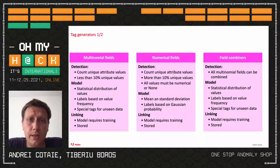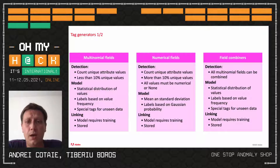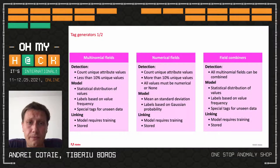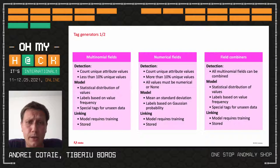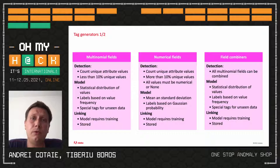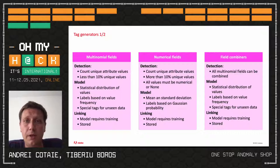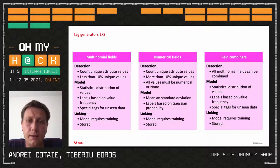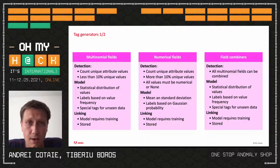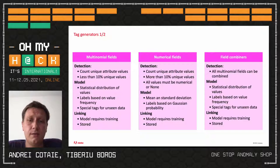For numerical fields, we detect them similarly — we count unique attribute values and expect more than 10% unique values, all of which must be floating-point numbers or a special value of none. If you have a numerical value in a field but get less than 10% unique values, they are treated as multinomial fields. To label numerical fields, we compute the mean and standard deviation for all observed values and assign labels based on the Z-rule, or the Gaussian probability of a value being part of all the observations. The model requires training and is stored.